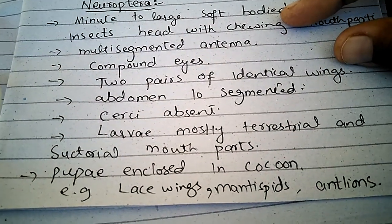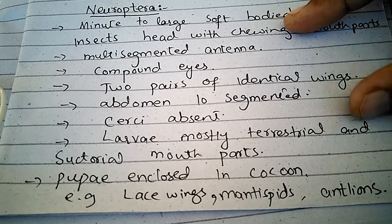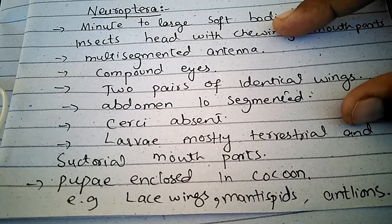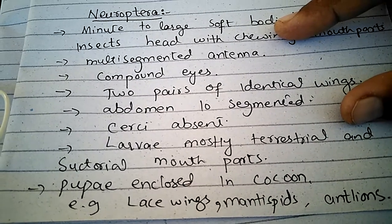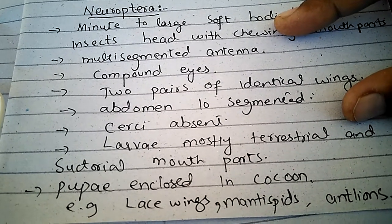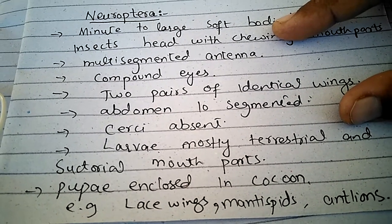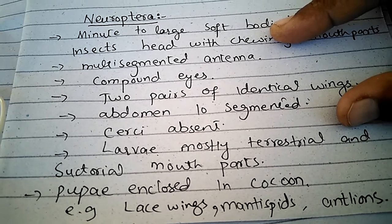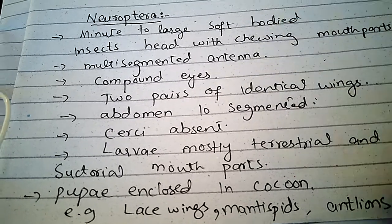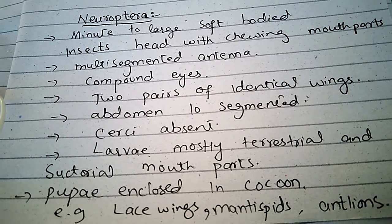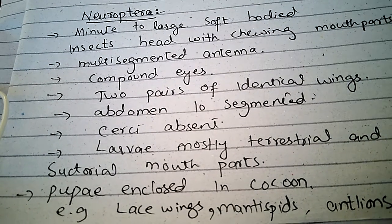Larvae are mostly terrestrial and suctorial mouthparts are present. Pupae are enclosed in a cocoon. Examples are the lacewings, mantispids, and the antlions.